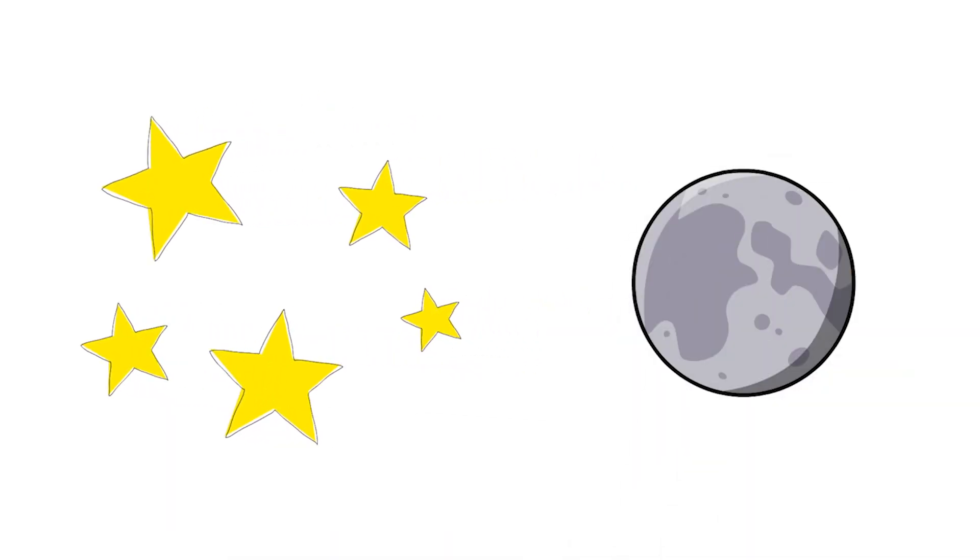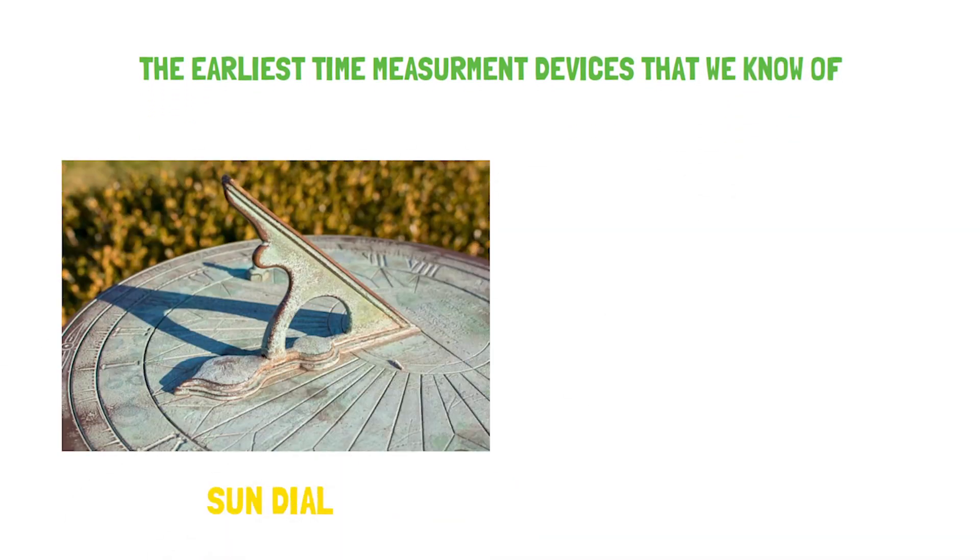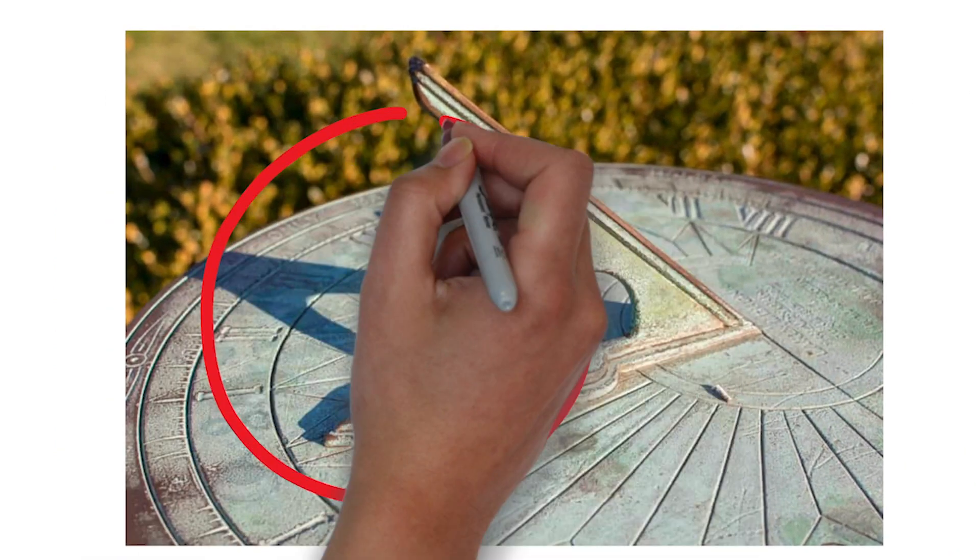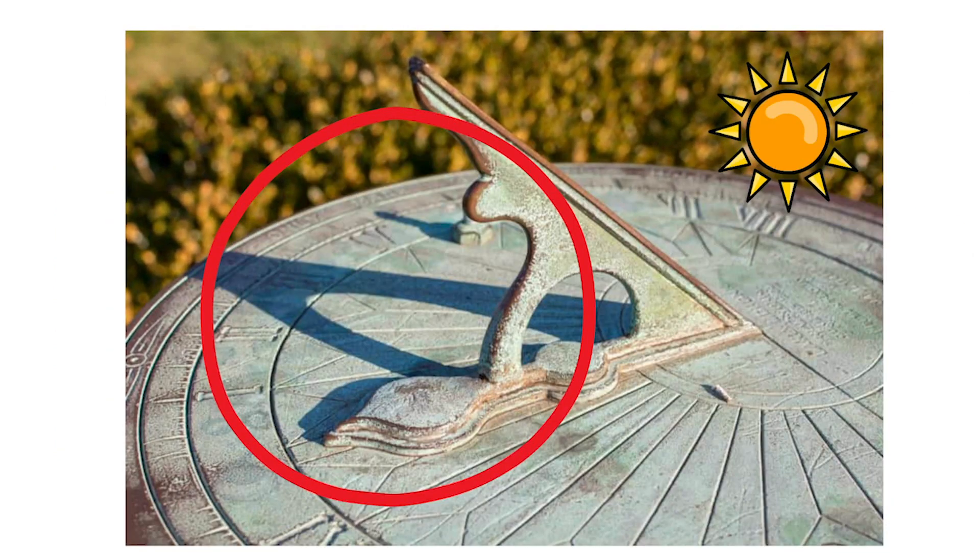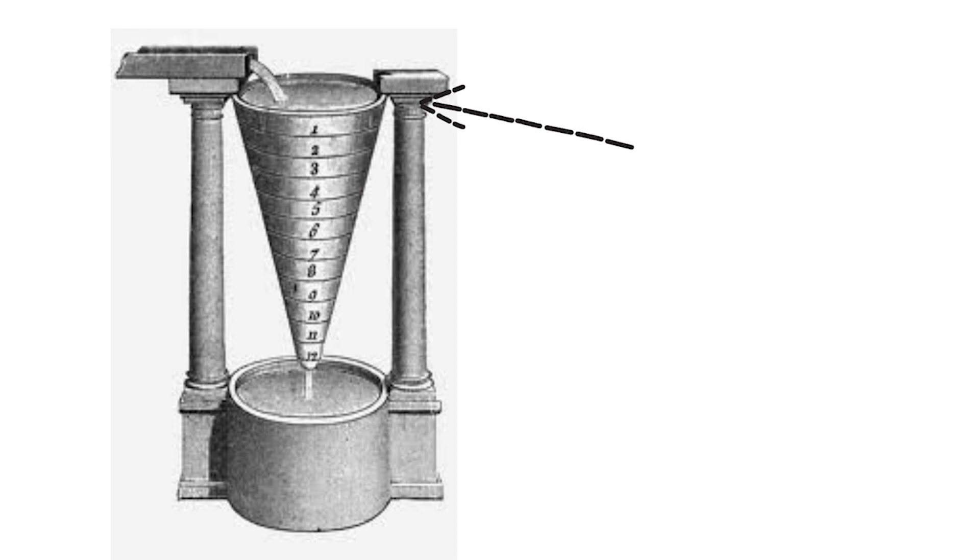The earliest time measuring devices we know of are sundials and water clocks. It used the shape produced by sunlight falling on a vertical rod to show local time. As the name suggests, these used a controlled flow of water to show the passage of time.